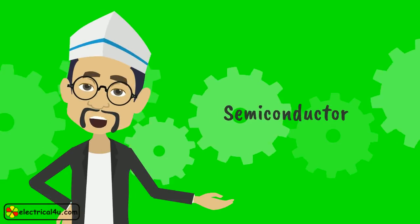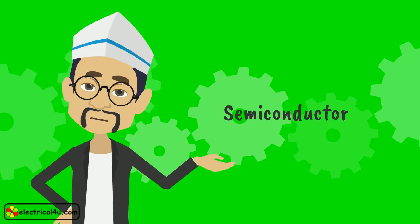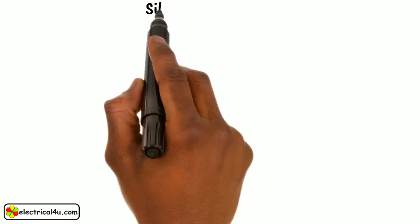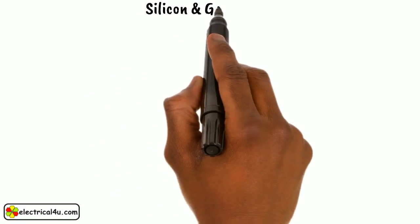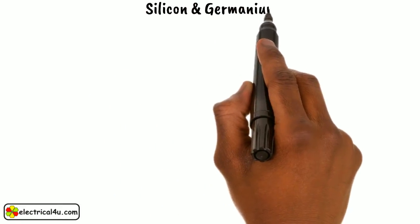Let us discuss semiconductors. The most common examples of semiconductors are silicon and germanium.